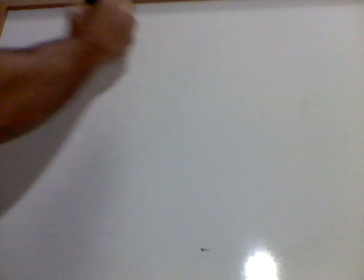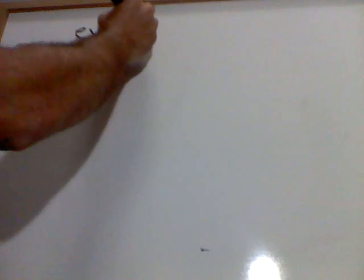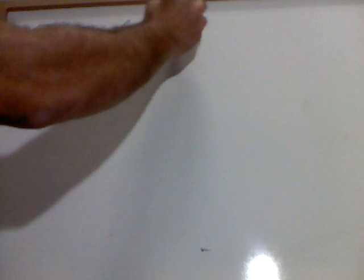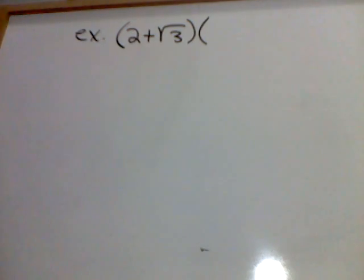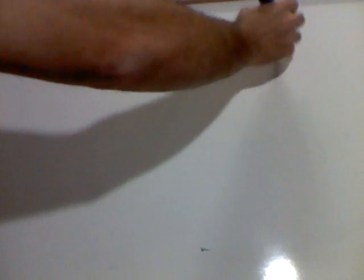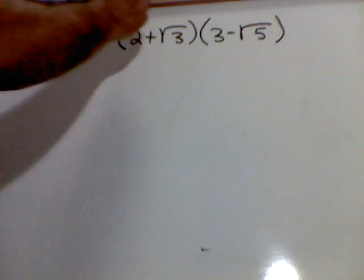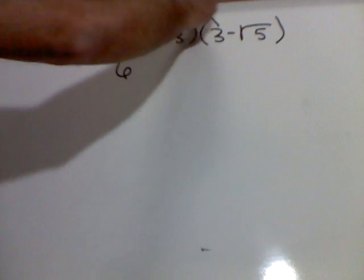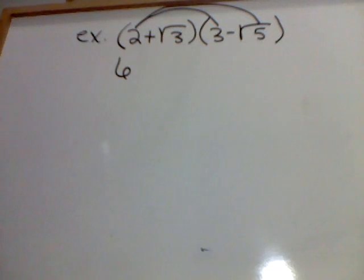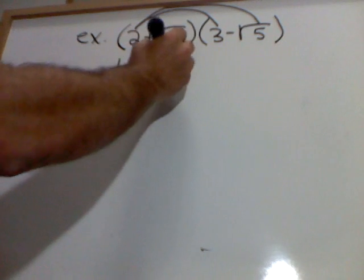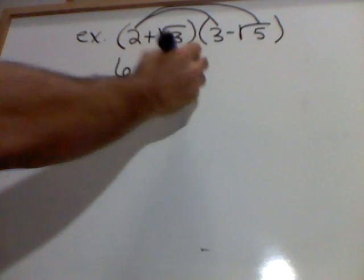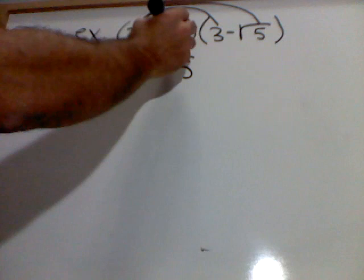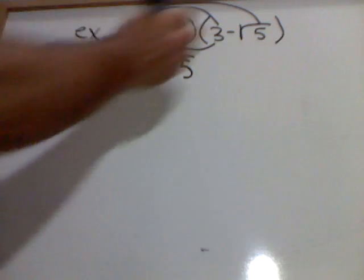Alright, a little foiling. I'm going to have 2 plus square root of 3. I'm going to multiply that by 3 minus square root of 5. Okay, foil. 2 times 3 is 6. 2 times a negative square root of 5 is a negative 2 square root of 5. Now, I got to take the square root of 3 times both of these.